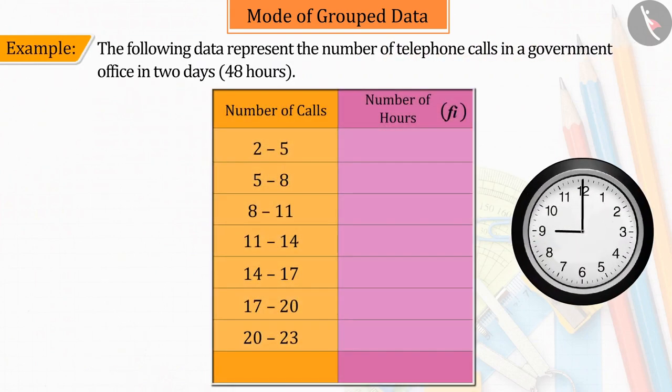The following data represent the number of telephone calls in a government office in two days, i.e., 48 hours.